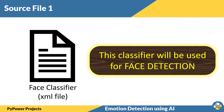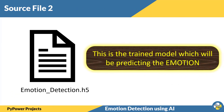For emotion detection using AI, we will require three source files for overall execution of this project. First is the face classifier. What this face classifier will do is detect whether the input frame in the video contains any face or not, because once the face is detected then only we will be able to detect the emotion.